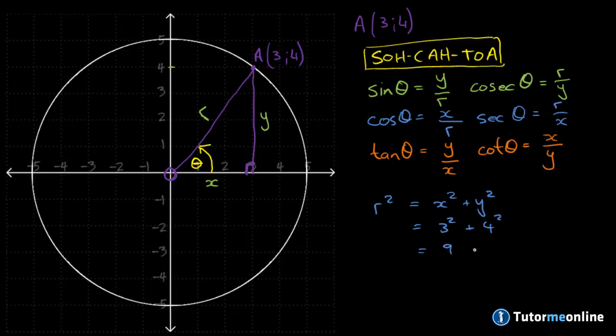That gives us 9 plus 16, which is 25. So r would be the square root of 25, which gives us 5. Now remember we said at the beginning that the radius of the circle, because O is the origin, or the center point of the circle, our radius is going to be constant throughout the circle.